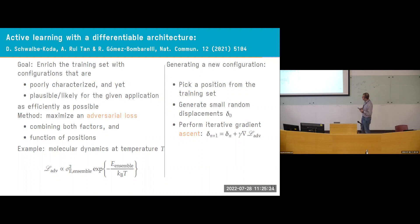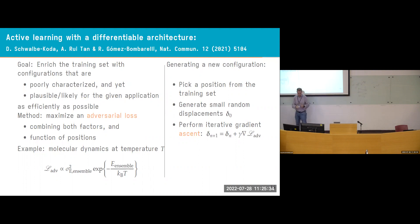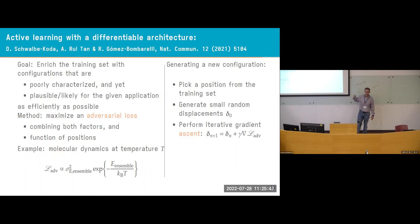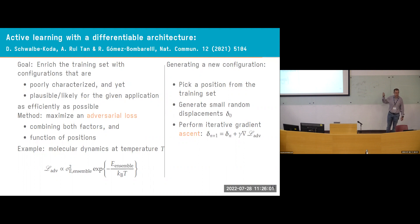Since our loss is a differentiable function, instead of passively identifying problematic points, we can actively generate them. We formulate an adversarial loss combining ensemble uncertainty with the plausibility of a point (e.g., Boltzmann factor in MD), and maximize it using the same gradient-based techniques used to minimize the ML loss. This generates points that are both physically likely and completely unknown to the neural network — very compact, uncorrelated training data for efficient active learning and retraining.